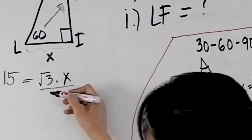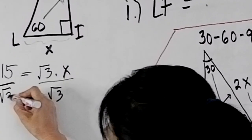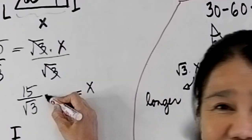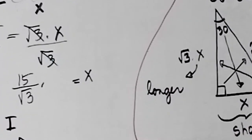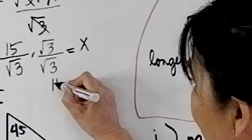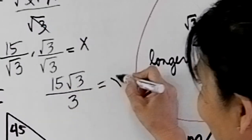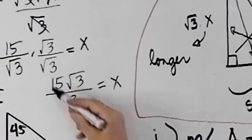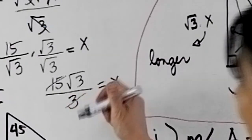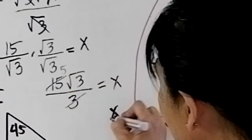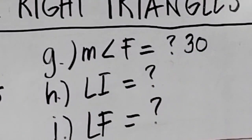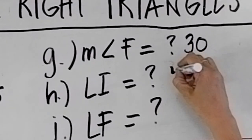We solve for X by dividing both sides by square root of 3. That gives X equals 15 over square root of 3. But this is not yet simplified — remember, there should be no radical in the denominator. To simplify, we rationalize by multiplying by square root of 3 over square root of 3. We get 15 square root of 3 over 3. We can simplify further: 15 divided by 3 is 5. Therefore, X equals 5 square root of 3. So LI, which is X, is 5 square root of 3.